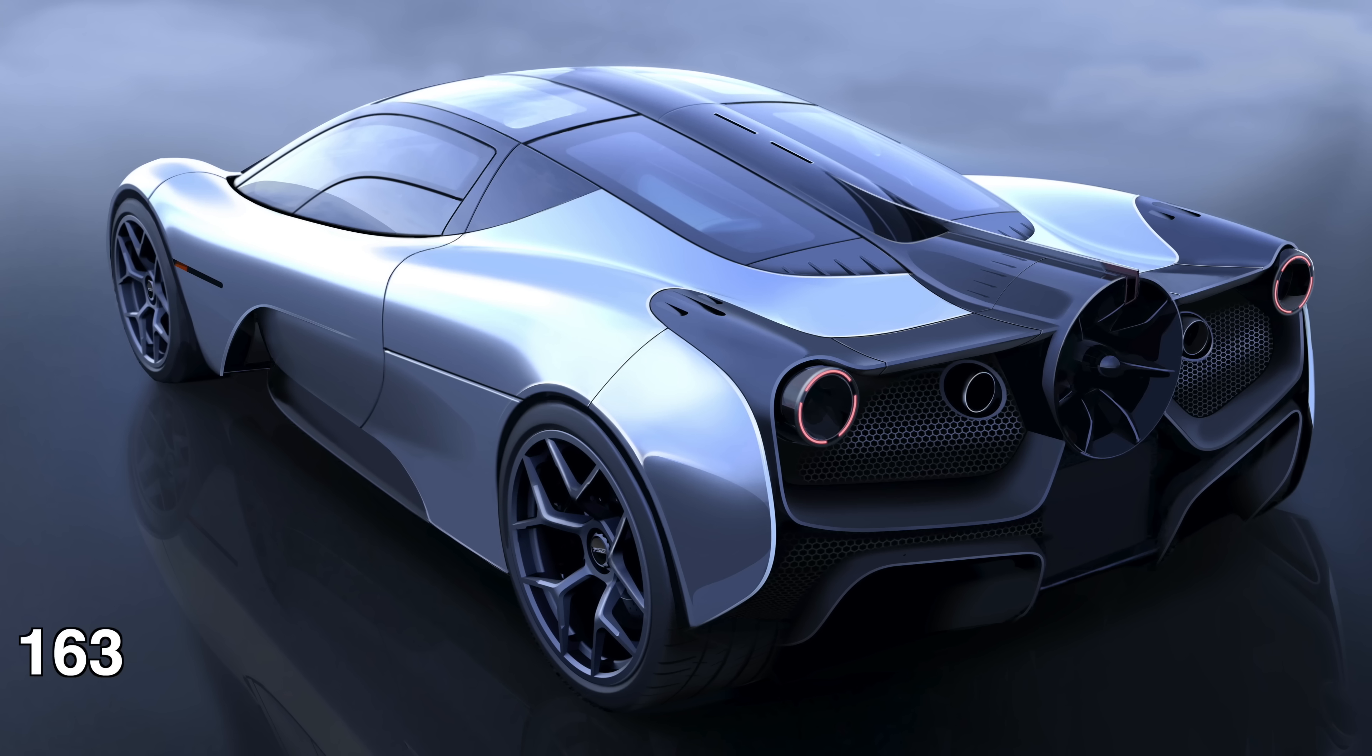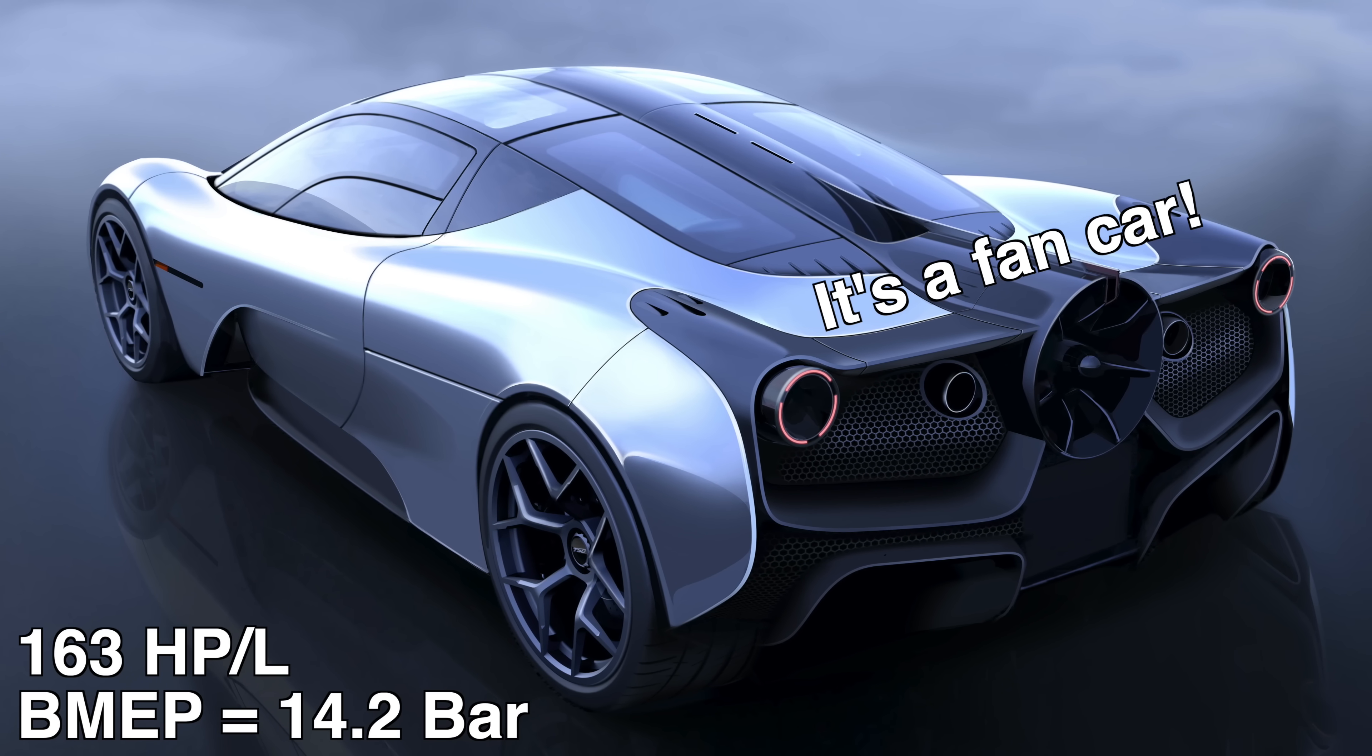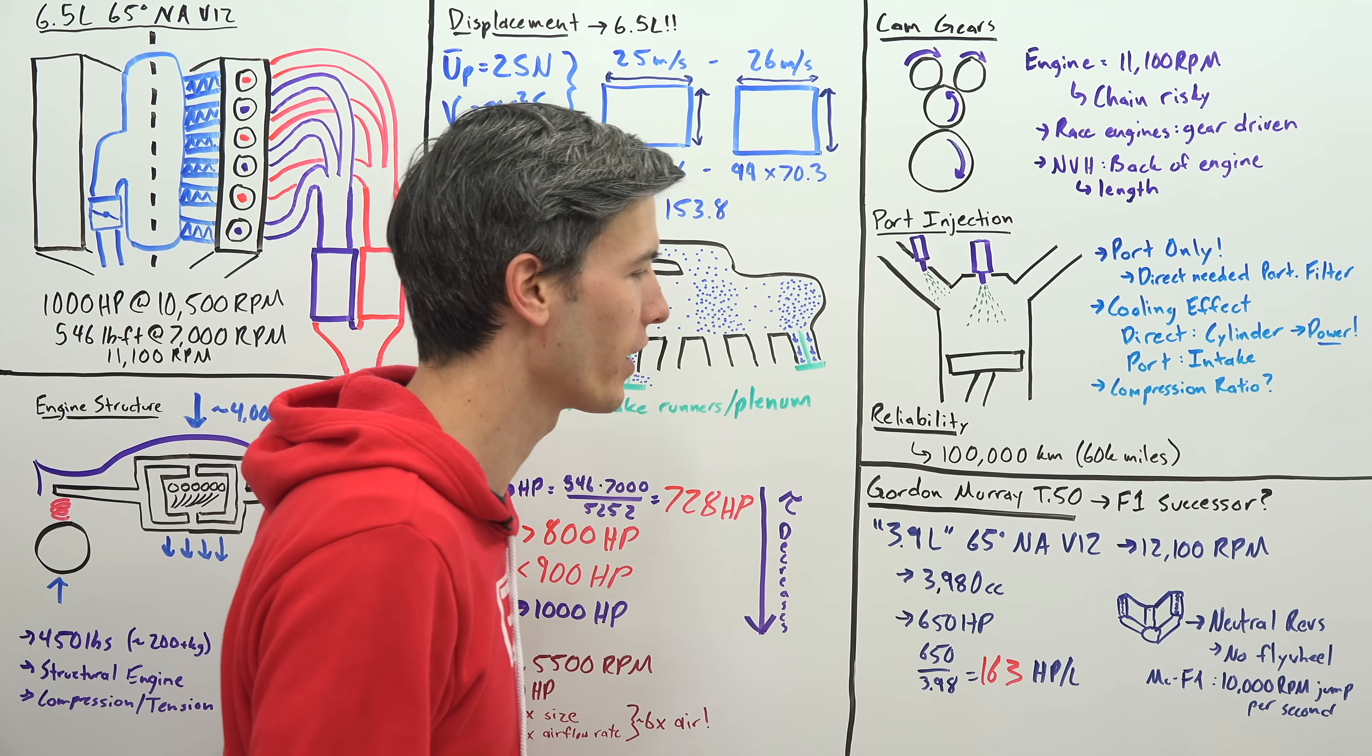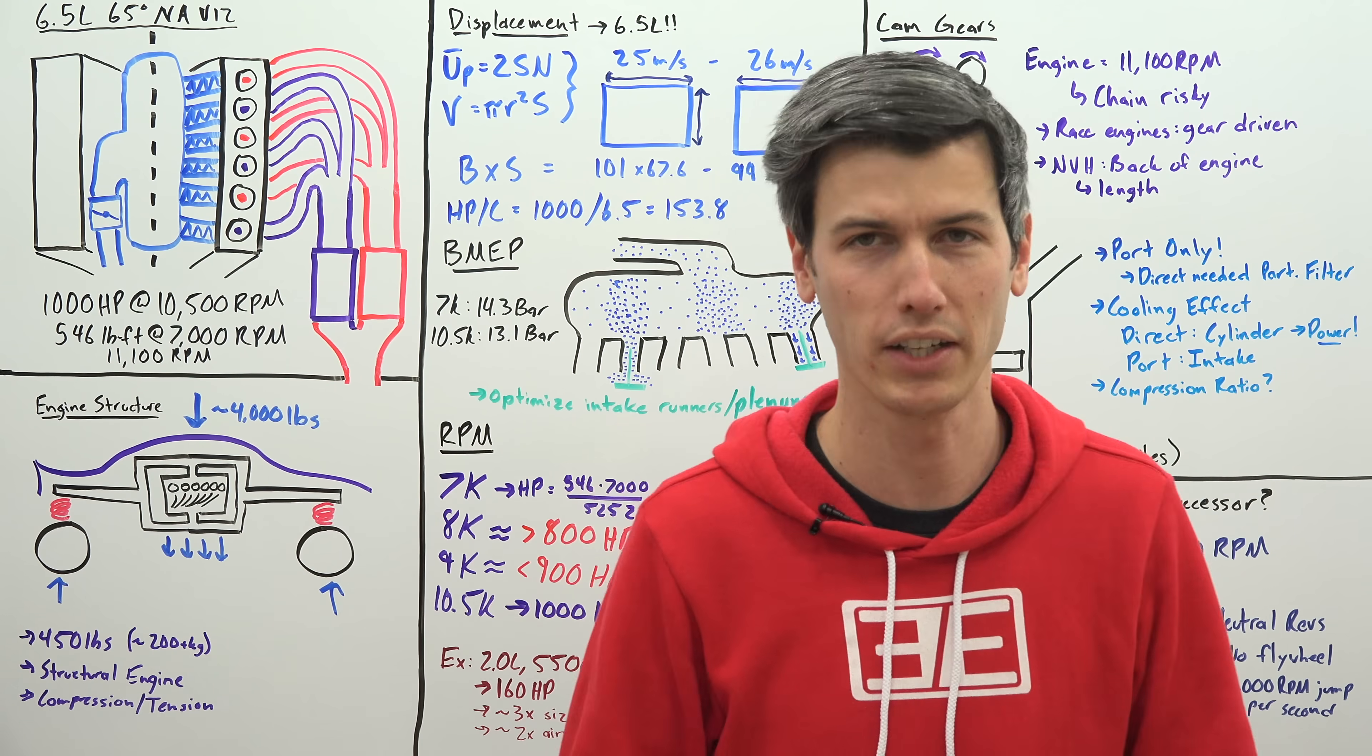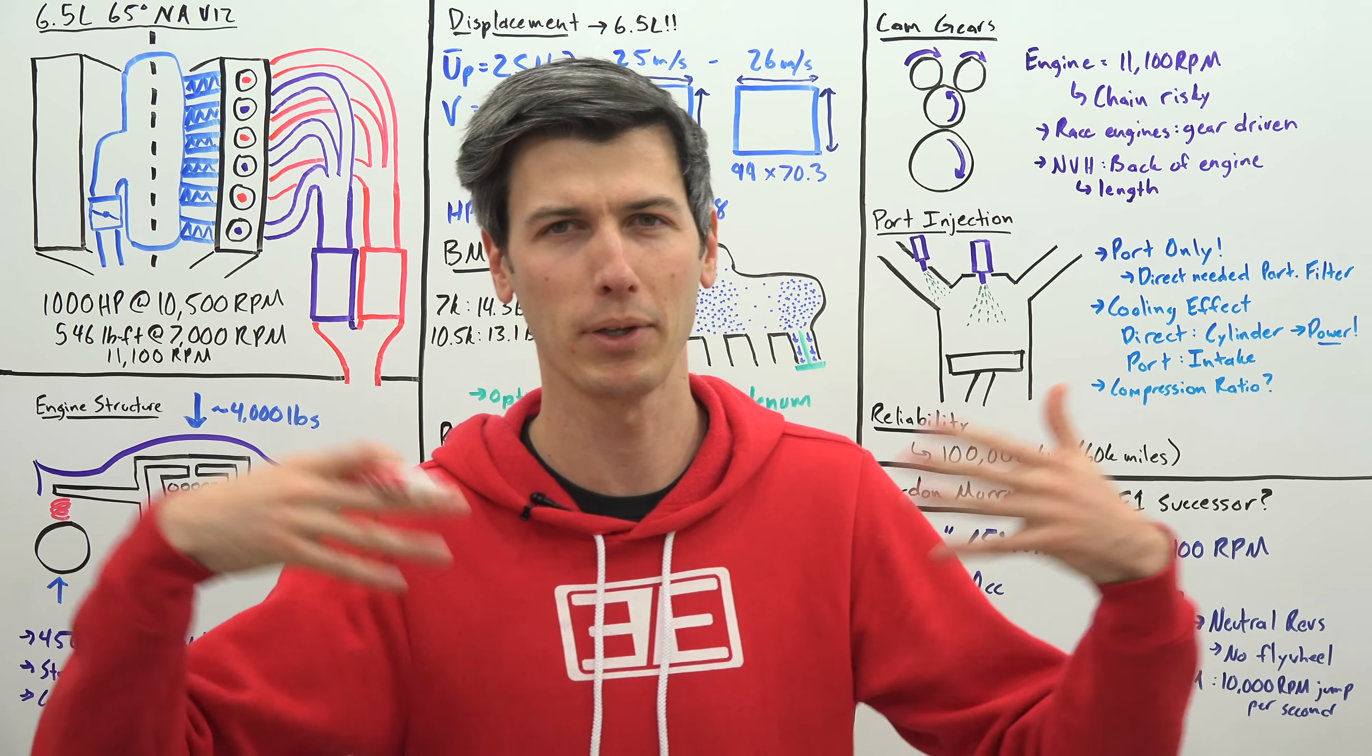Now in an interview with Top Gear Gordon Murray said one of the really cool things about the McLaren F1 was how quickly it revved while in neutral. So he said it could jump 10,000 rpm per second which was kind of a target that he wanted to say you know for this engine I also want to make sure it has that really high revving happy revving nature.